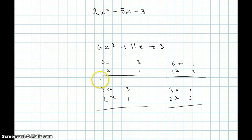Okay. 6x squared plus 3. 6x times 1 is 6x plus 3x is 9x. So, this is wrong. 6x times 1x is 6x squared. 1 times 3 is 3. 3 times 6x is 18x plus 1x is 19. So, this is wrong.